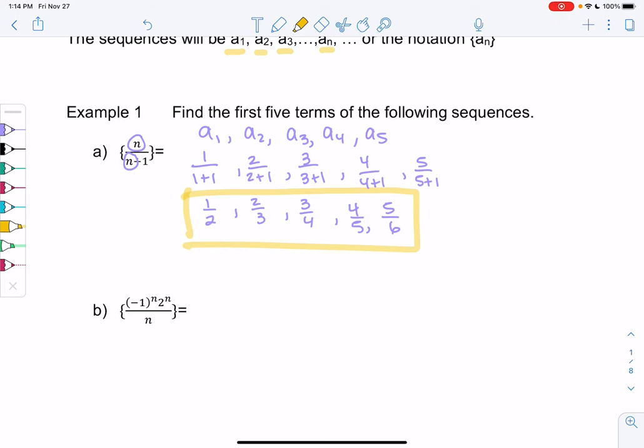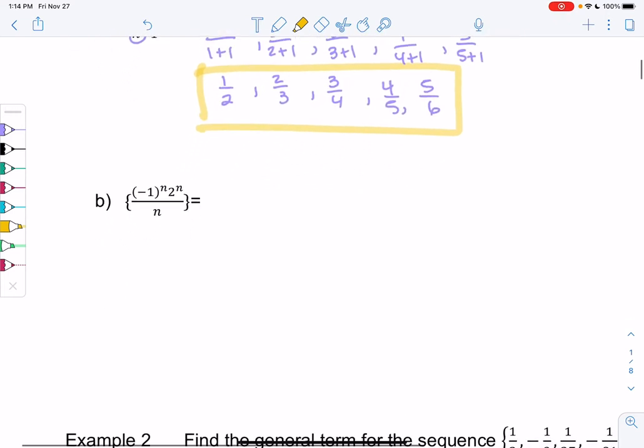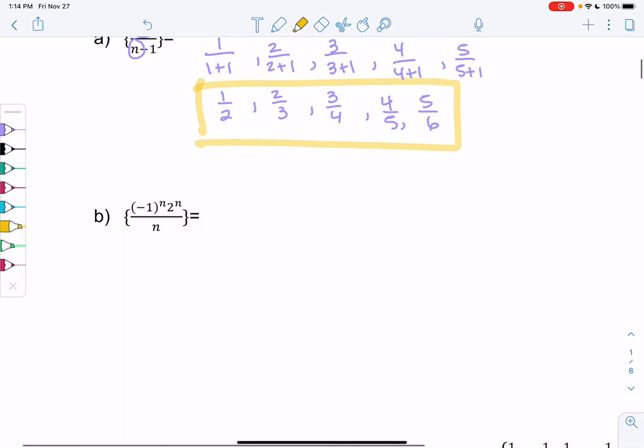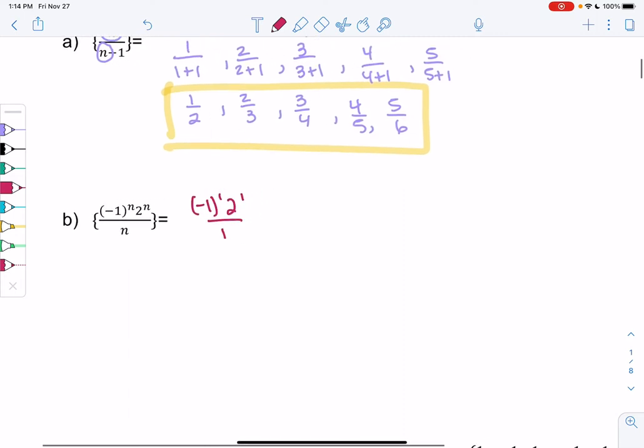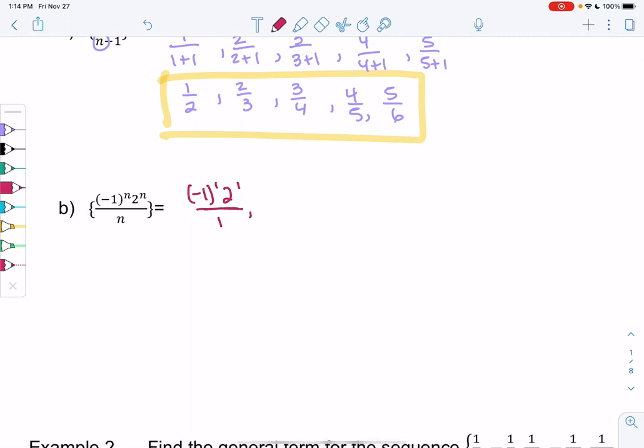Let's try another one. It's a little messier. So we have negative 1 to the n, 2 to the n, all over n. And again, we'll do the first five. So we'll get negative 1 to the 1, 2 to the 1, over 1. I'm going to list them all out and then simplify.